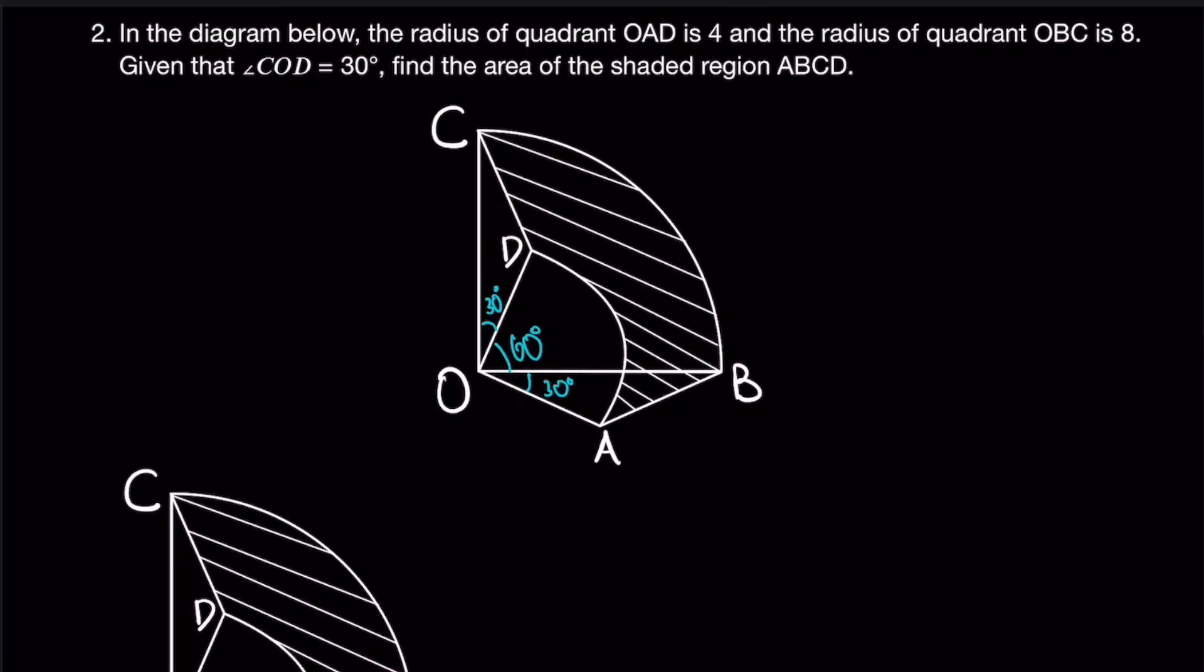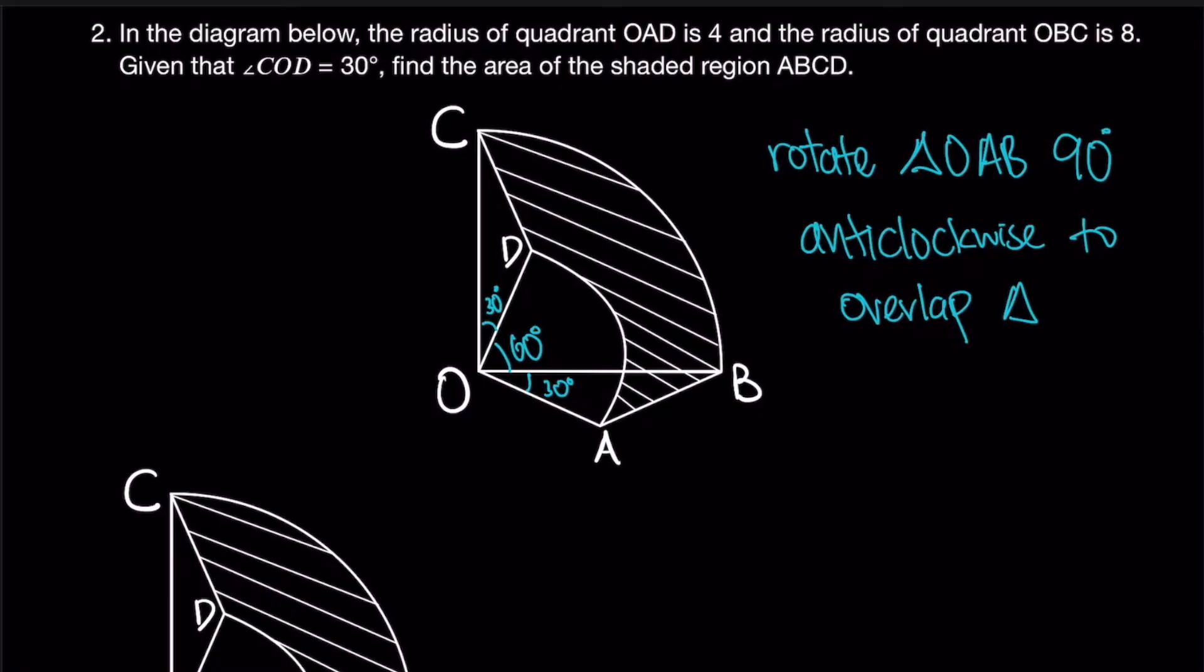Alright, so for geometry questions, what we'll do here is rotating triangle OAB. And where do we rotate it to? We can actually rotate it OAB 90 degrees anticlockwise. And you'll realize that it overlaps triangle OCD. Okay, anticlockwise to overlap triangle OCD. Alright, so from here you'll rotate it and you'll fit nicely into OCD given that their angles is the same.